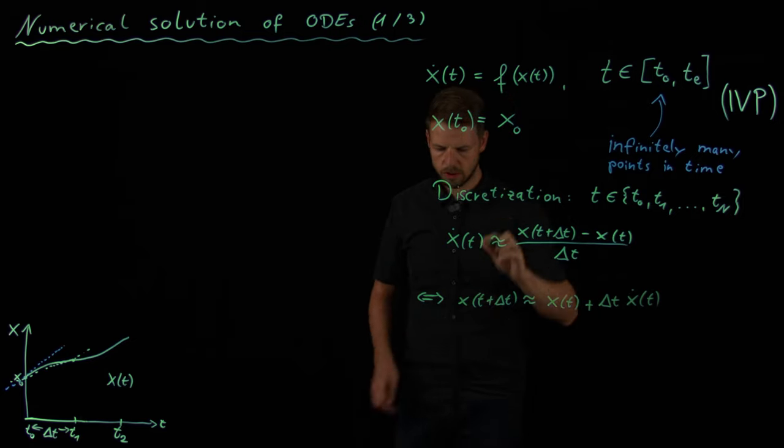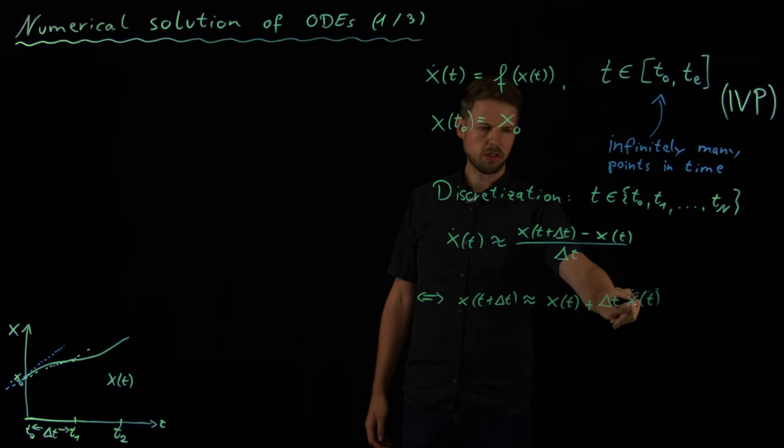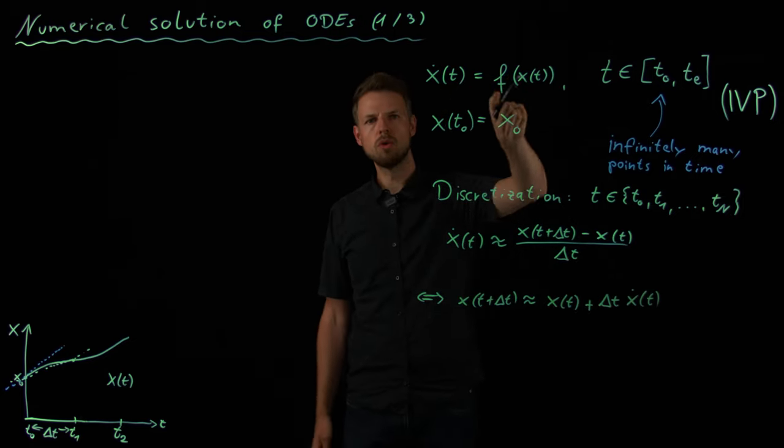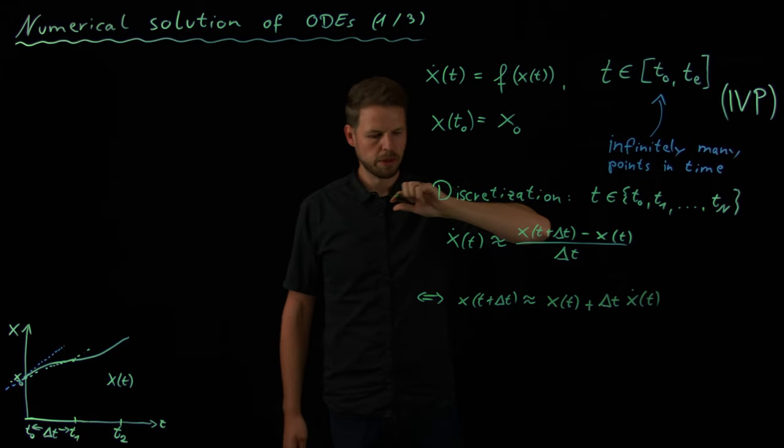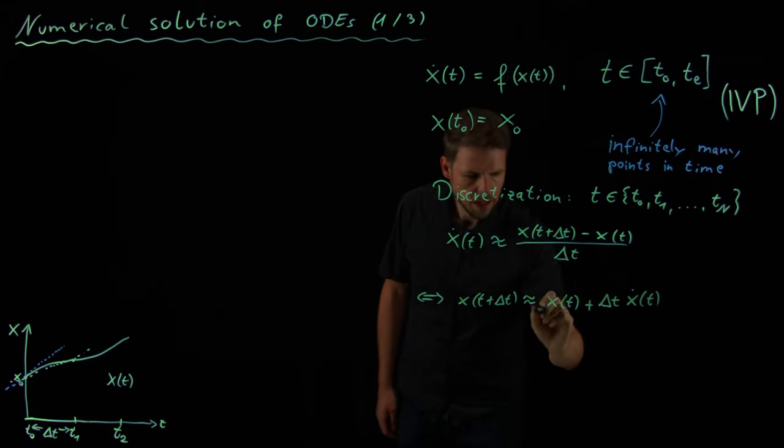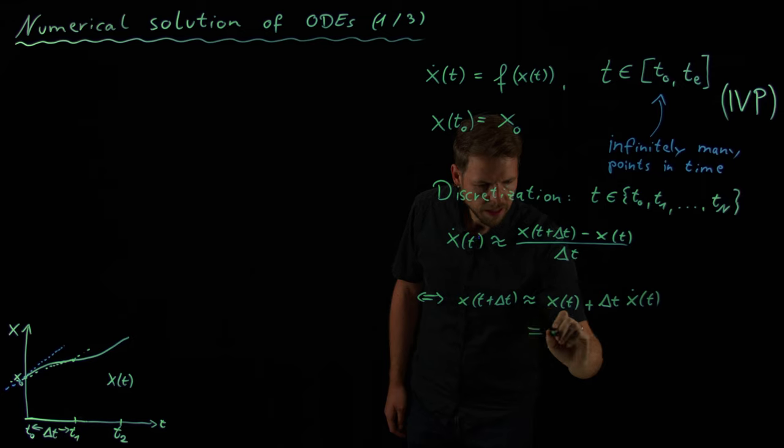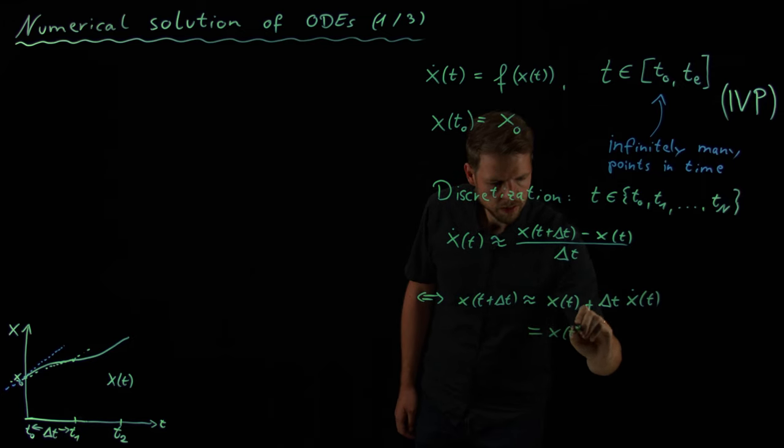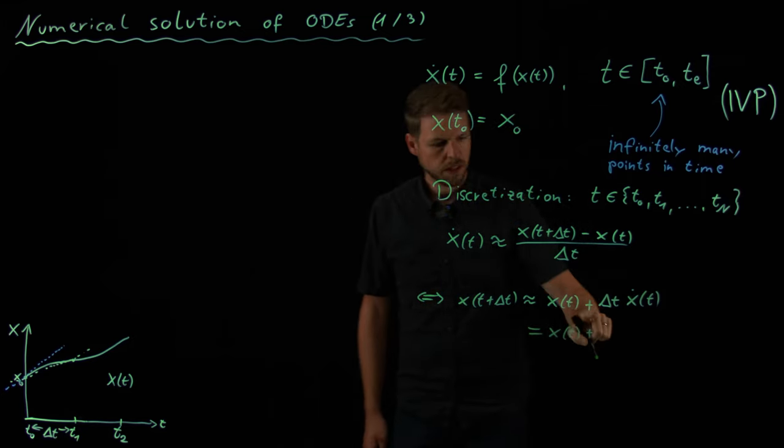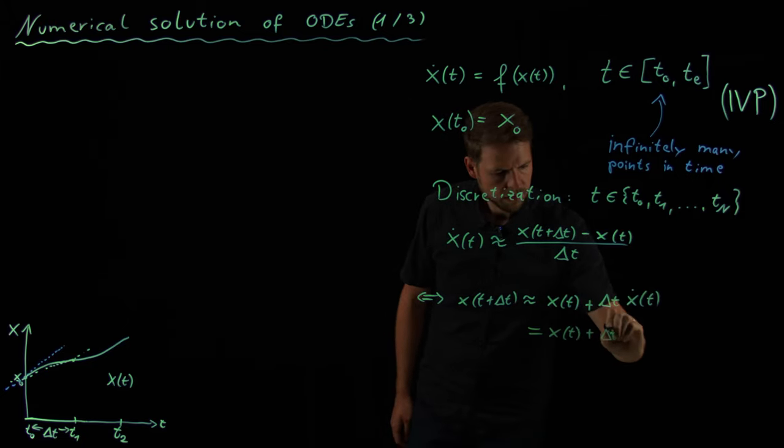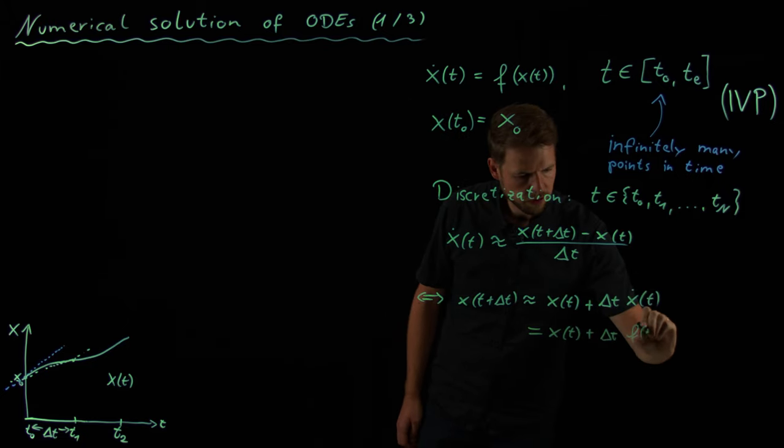But what you see now, this x dot is something I know because I do know, for now, the right hand side of my dynamical system. Which means this is x of t plus delta t times f of x of t.